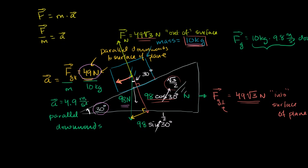Now let's say that wasn't happening — let's say you look at this system and the block is just stationary. For the sake of argument, let's assume it's not ice on ice, but both made out of wood. Now we have a situation where the block is stationary. If it's not accelerating in the normal perpendicular direction, there must be zero net forces on it. And if it's stationary as a whole, then there must be zero net forces in the parallel component as well.